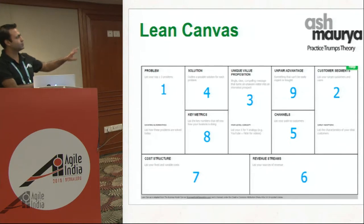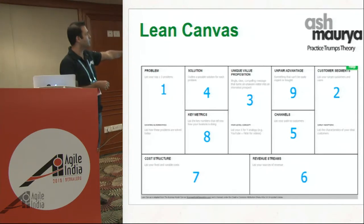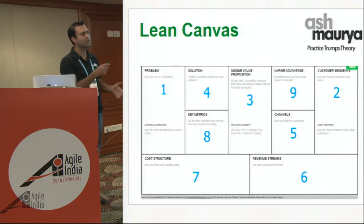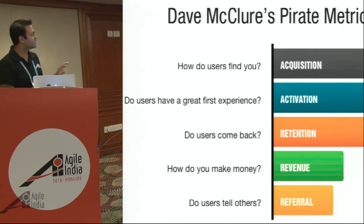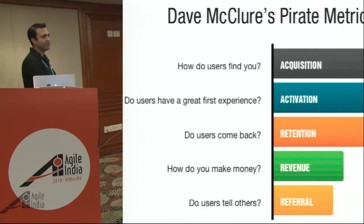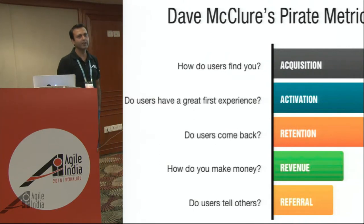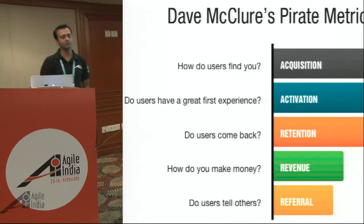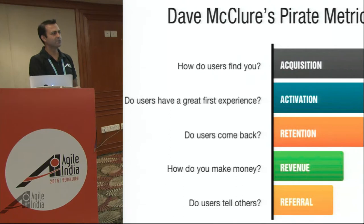In the lean canvas you figure out your problems, your solutions, and your key metrics that you always look at and change your behavior based on. The one I've applied and will go deeper into is Dave McClure's Pirate Metrics — really, really simple. If there's one takeaway from this session, it's that. Really helpful to understand any business.